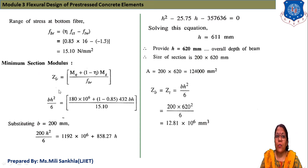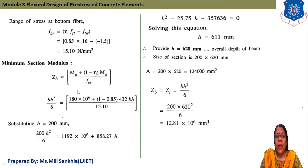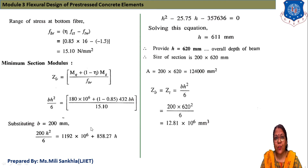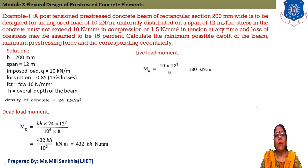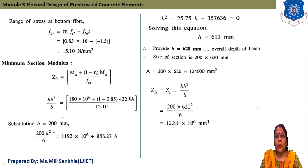The minimum section modulus Z_b = (M_Q + (1 − η)·M_G) / f_br. Here Z_b = B·H²/6, M_Q = 180 × 10⁶ N·mm, (1 − η) = 0.15, M_G = 432·BH, f_br = 15.10. Substituting B = 200 mm (given), H is unknown, so we set up the equation.